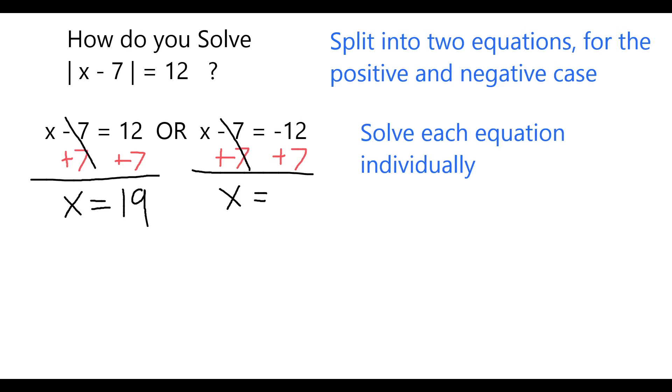The other possibility is that it's negative 12 plus 7, which is going to be negative 5.